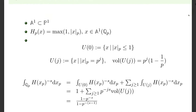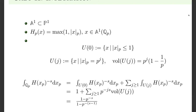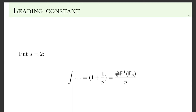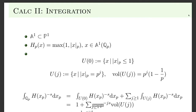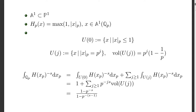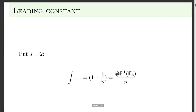Then I sum over the other charts or the other pieces, and I get this expression. So what is the special value at S equals 2? S was a complex number. At S equals 2, I see 1 minus P to the minus 2 divided by 1 minus P to the minus 1, and so I get P plus 1 over P. This is the number of points on P1 divided by P to the 1, which is the dimension of P1.